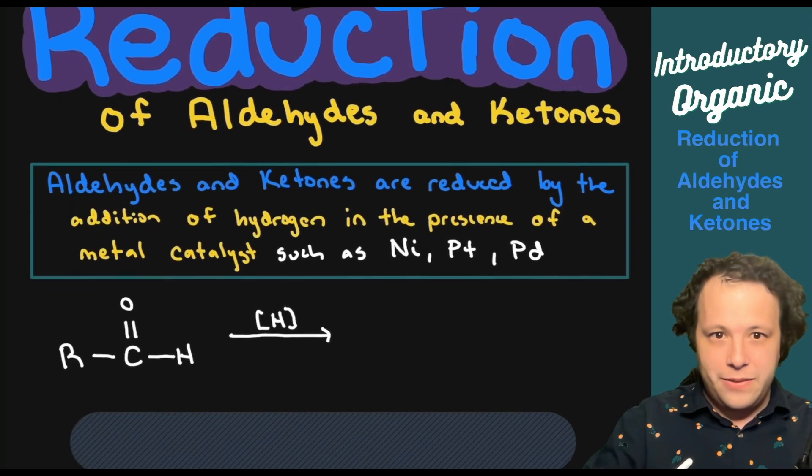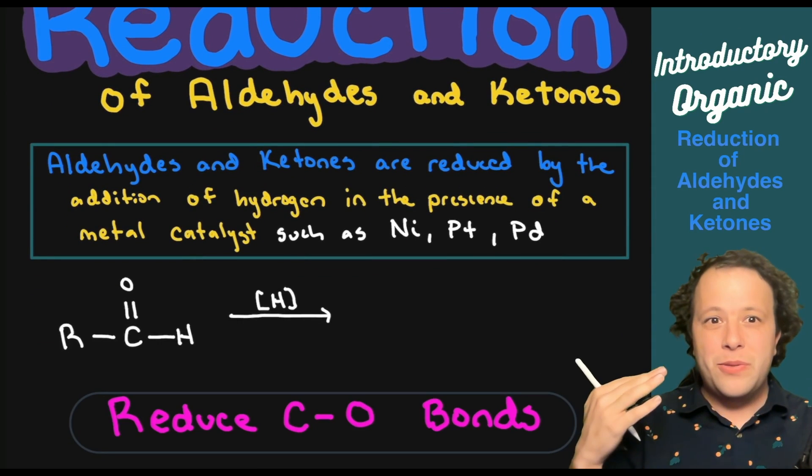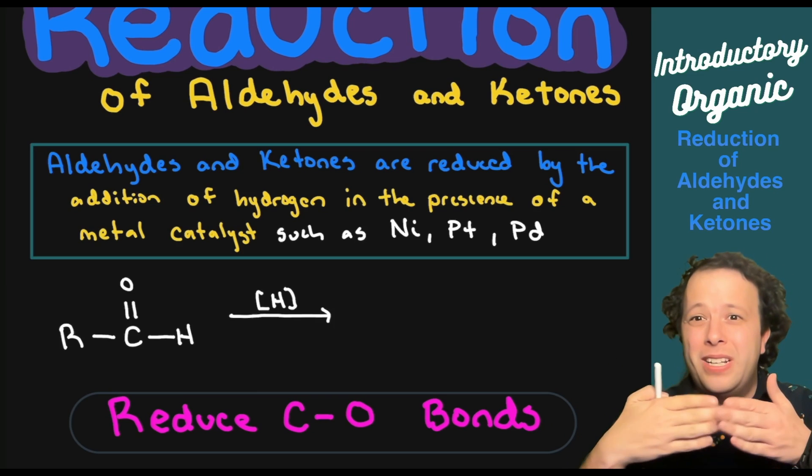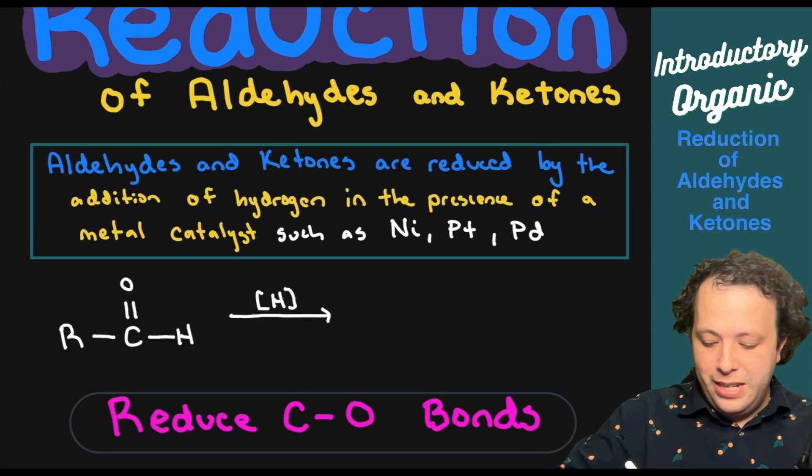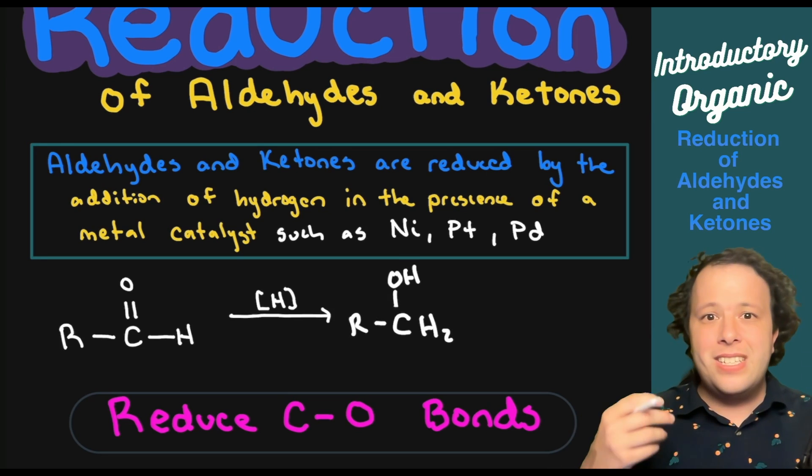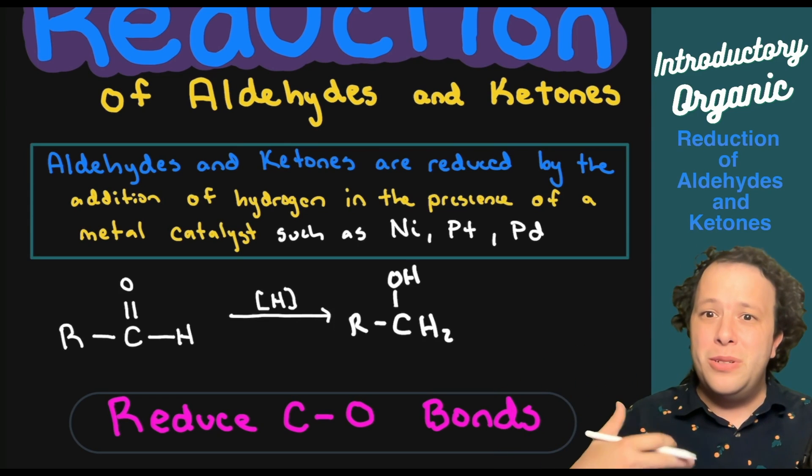If I have the following example, we're reducing the number of C-O bonds by essentially opening the doors like we did in an addition reaction. Simply, we're taking our aldehydes and ketones and turning them into alcohols. We're changing the double bond to an alcohol, reducing C-O bonds.